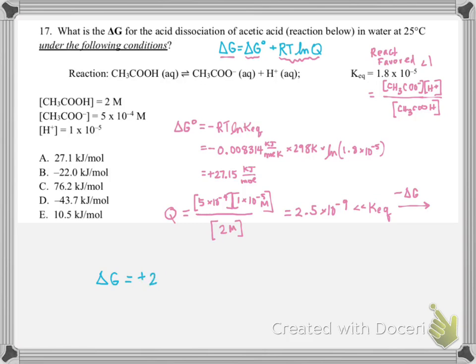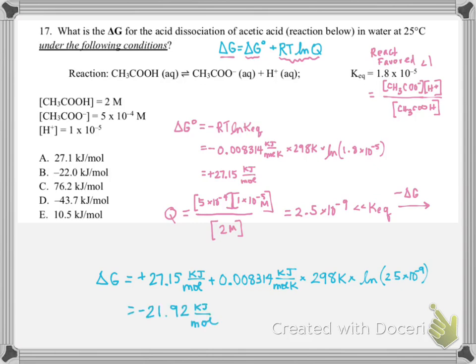We'll have our positive 27.15 kJ per mole. You want to make sure you have your R units matched up correctly — so I'm doing everything in kilojoules. When we plug that in we get negative 21.92 kilojoules per mole, which corresponds to answer choice B. That's the amount of energy that's going to be released as we go from this initial concentration set to equilibrium.